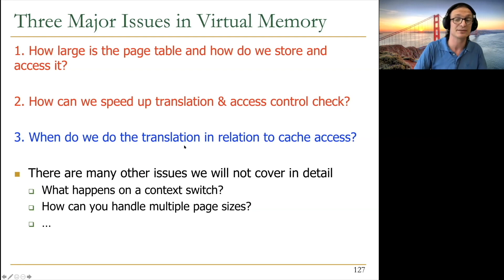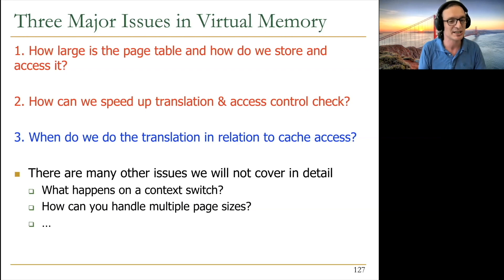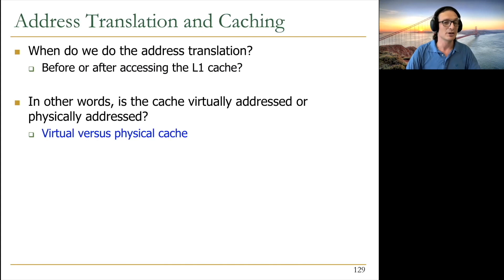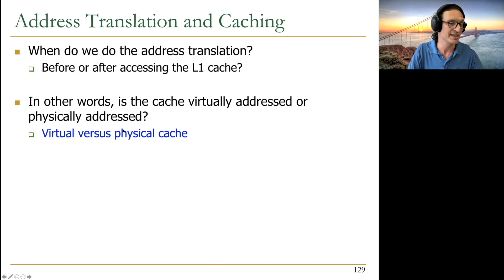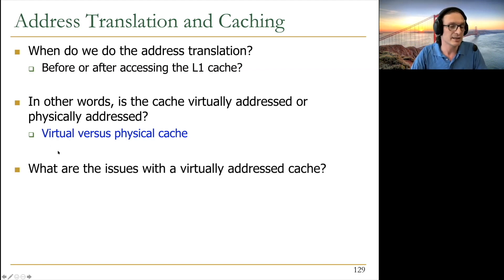The third issue: when do we do address translation in relation to cache access? This is especially important for the L1 cache. If translation must happen before cache access, it's on the critical path of cache access. The key question is: do you translate before or after accessing the L1 cache? In other words, is the cache virtually addressed or physically addressed?